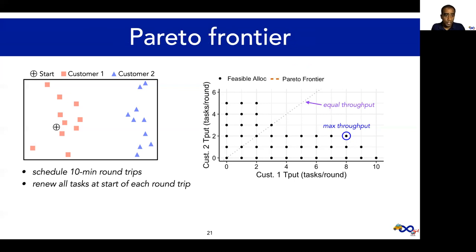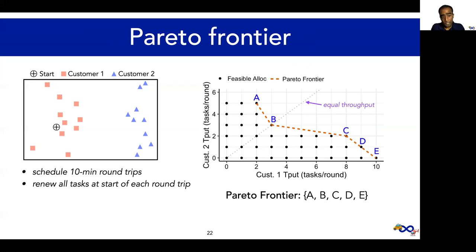There's no reason to want to schedule in the interior of this feasible set. Rather, we're only interested in schedules on the Pareto frontier. In this example, schedule B is a fair Pareto optimal schedule. However, notice that its total throughput is low, since a vehicle is forced to make a special trip to customer 2's cluster. The max throughput schedule fulfills four more tasks per round than this fair schedule. Can we achieve higher throughput while still being fair?